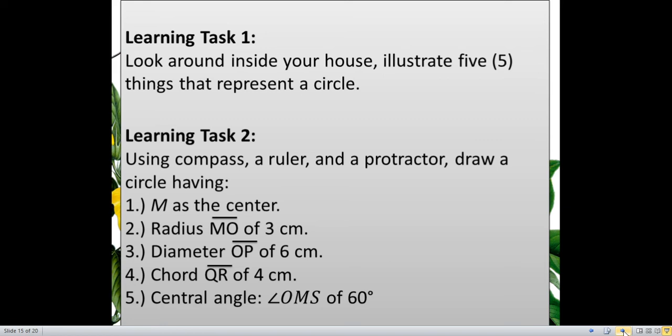For the learning task 2, using compass, a ruler, and a protractor because it has an exact measurement here that it says. Draw a circle having number 1, M, as the center. So, you will have a circle M. And then, you should draw, for number 2, a radius, naming MO, of 3 cm. It should be just 3 cm. For number 3, diameter OP, of 6 cm. It should be just 6 cm.